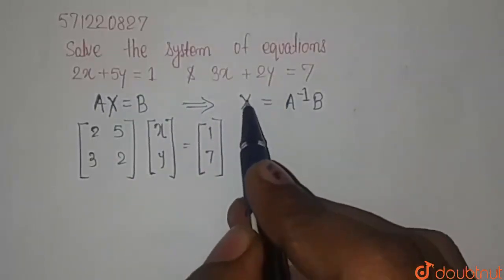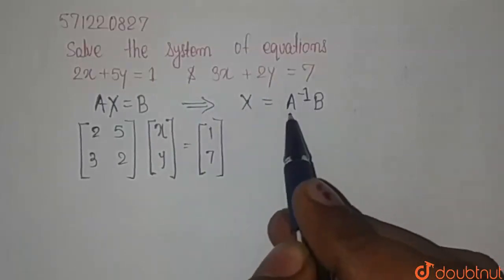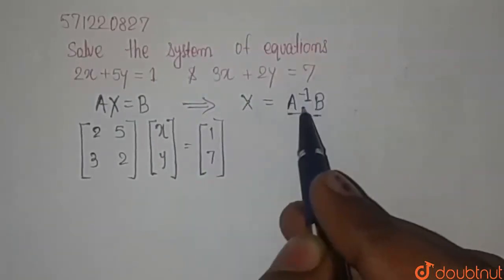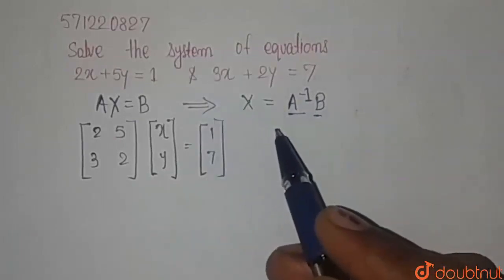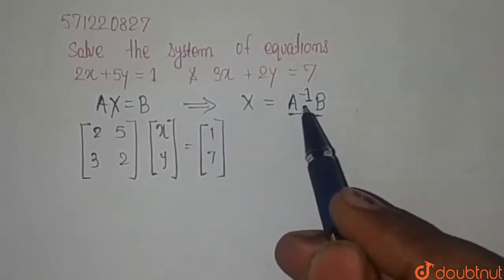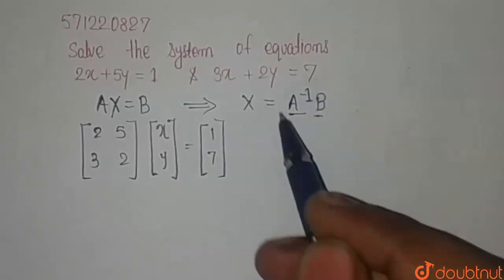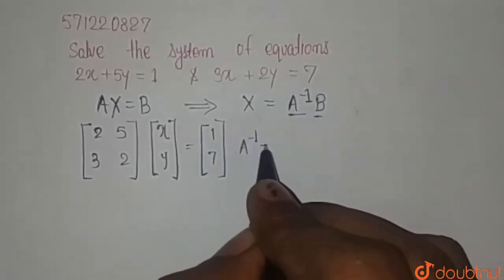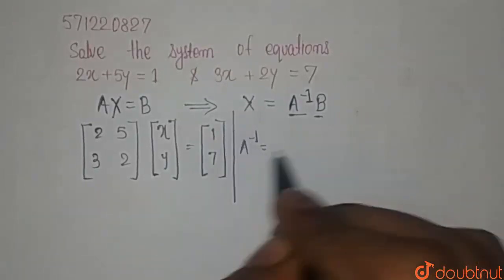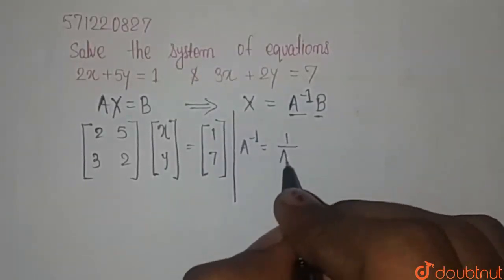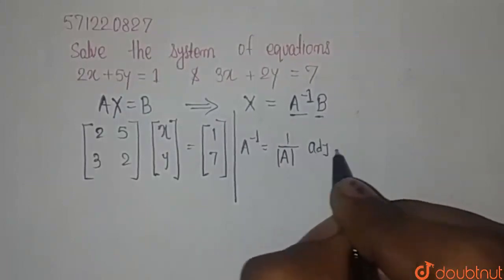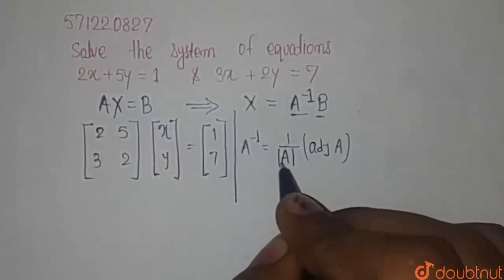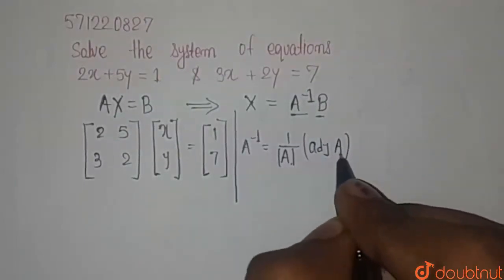To find the column matrix X, we have to find A inverse and then multiply it with B to get our required solution. To find A inverse, we know that A inverse is given as 1 over the determinant of A, multiplied by the adjoint of A. So let's find the determinant of A and the adjoint of A.